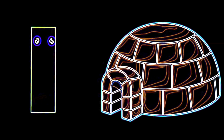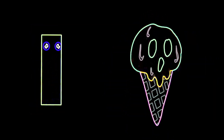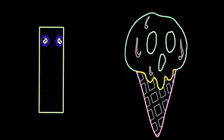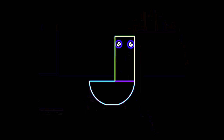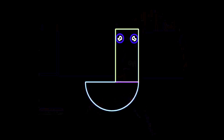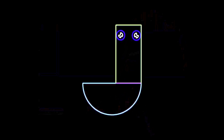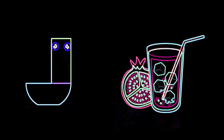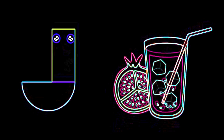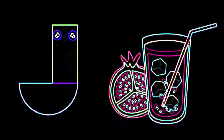This is the letter I. I is for Igloo. I is for Ice Cream. This is the letter J. J is for Juice.